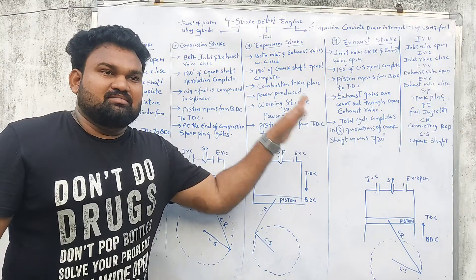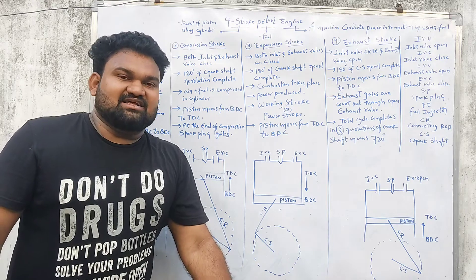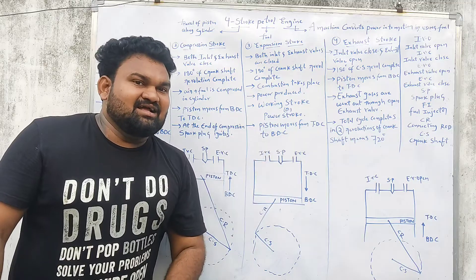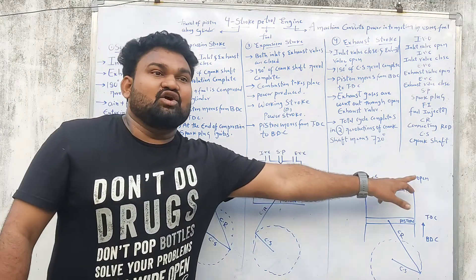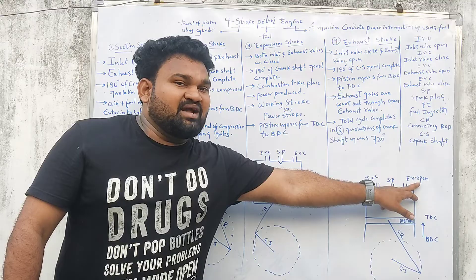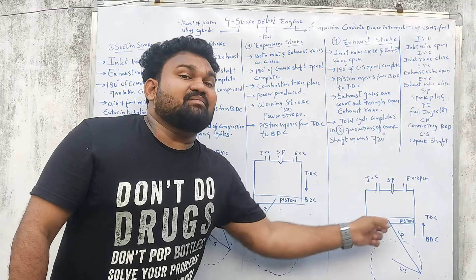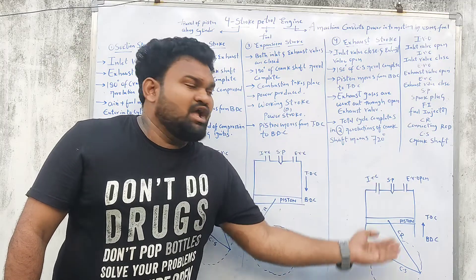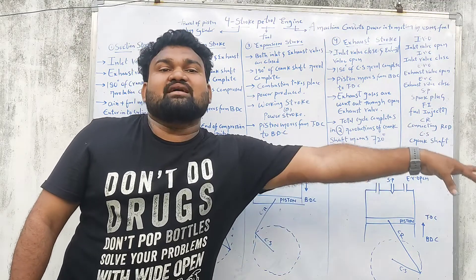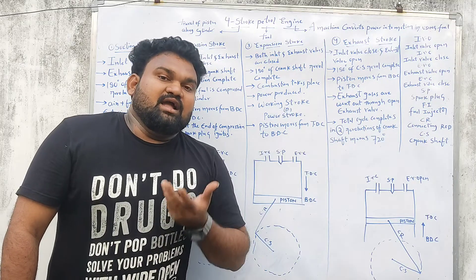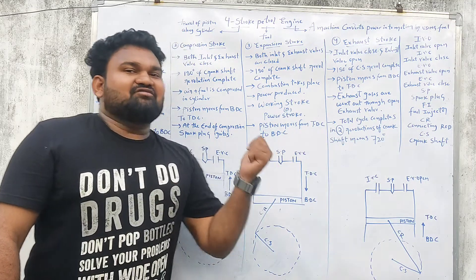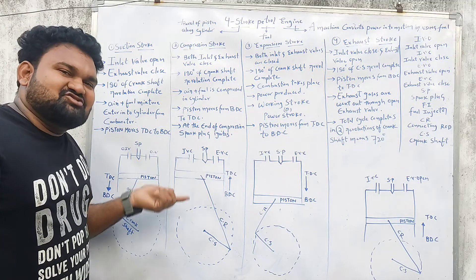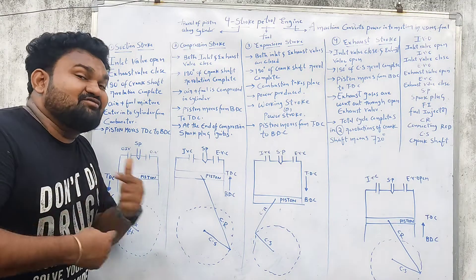The third stroke is the expansion stroke — TDC to BDC. Expansion takes place after combustion. The fourth step is the exhaust stroke. The exhaust valve is open and the crankshaft rotates. The piston moves from bottom dead center to top dead center and exhaust gases go out.